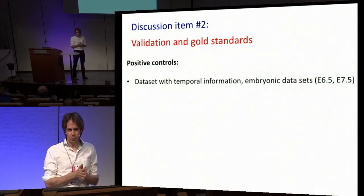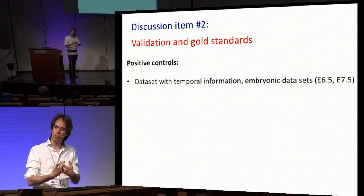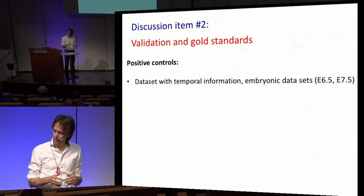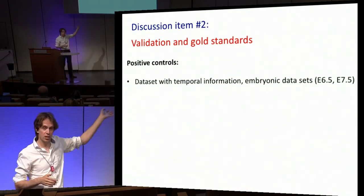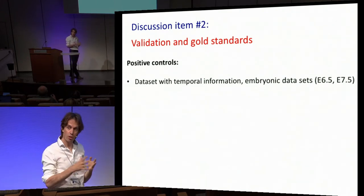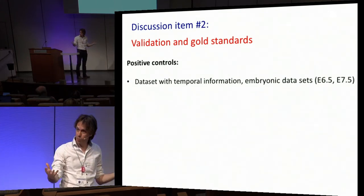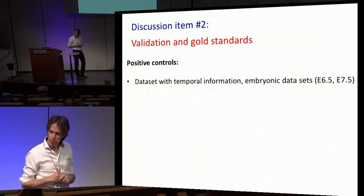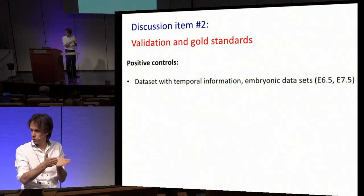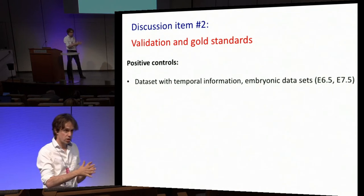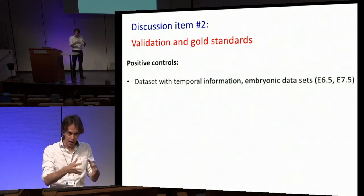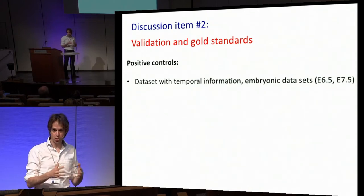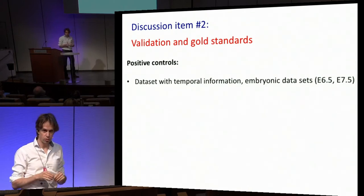Positive controls: there are a lot of experimental systems where temporal information is built in. For example, in embryogenesis, biologists label it E6.5, E7.5 — those embryonic days. If you pull the dataset, you know part of the data was generated 6.5 days after fertilization and the other 7.5. So we actually have temporal data in there you can use to at least partly validate predictions of your trajectories.